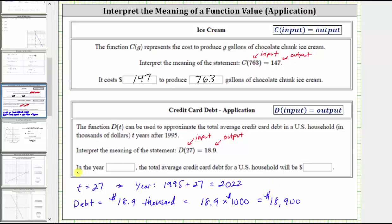So as a complete sentence, we can say in the year 2022, the total average credit card debt for a US household will be approximately $18,900.